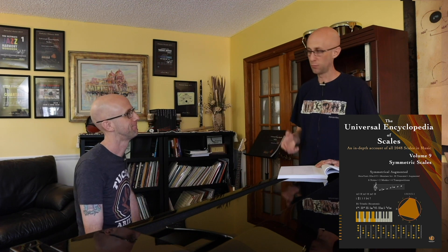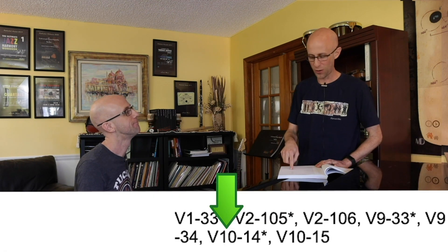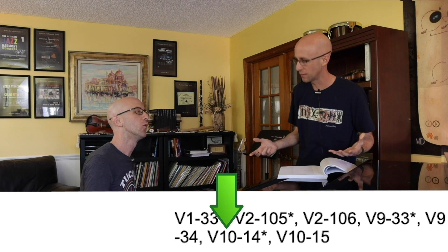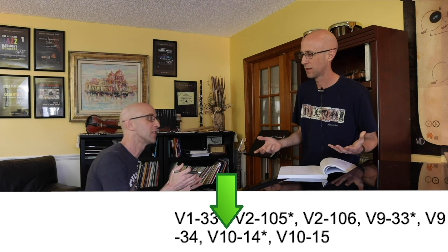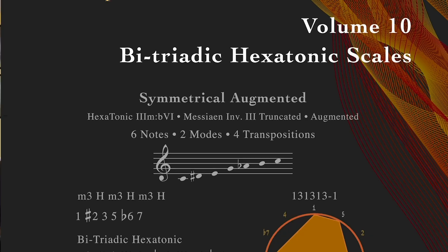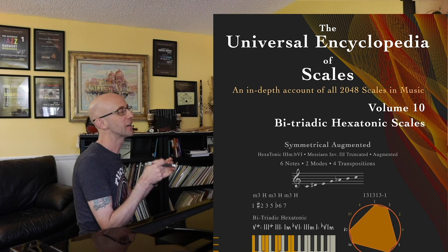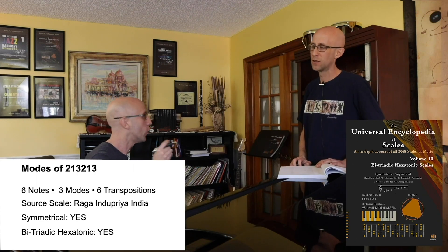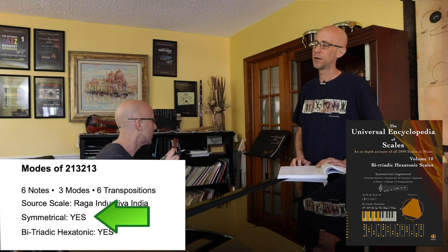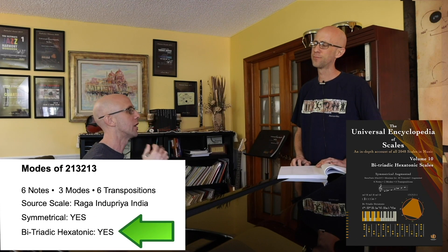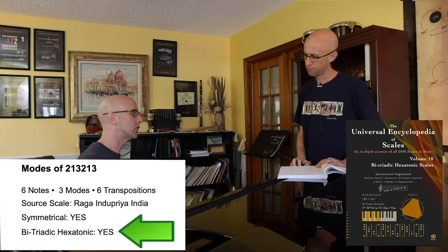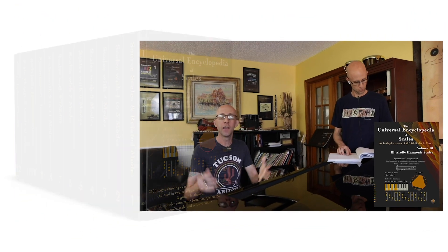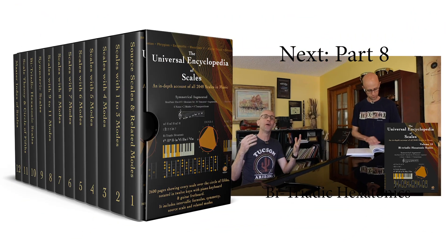But wait, it also says it's in volume 10. What's volume 10? Well, volume 10 contains all of the bitriadic hexatonic scales. And the Raga Dupriya India is not only a symmetric scale, but also a bitriadic hexatonic, which is why you'll see it in volume 10. And that's exactly what we're going to talk about next time — bitriadic hexatonics: what are they and why are they important? So come back next time.